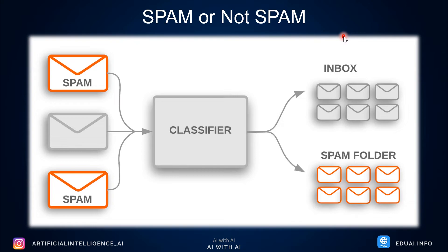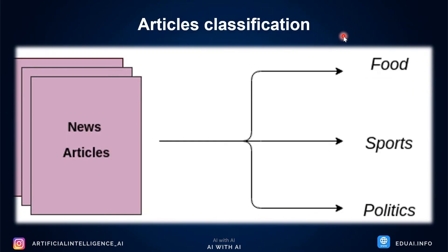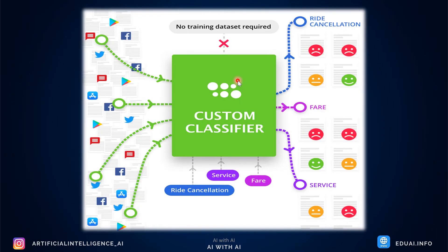Naive Bayes can classify emails into categories: primary, social, not important, or spam — the different categories you see in your email inbox today. This works through text classification, where the algorithm reads the data and performs multi-class classification. Similarly, Naive Bayes can be used for article classification — given a news article, it can identify whether it is related to food, sports, or politics. This is where Multinomial Naive Bayes comes into the picture.